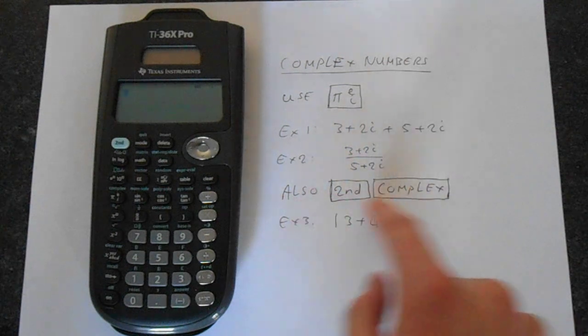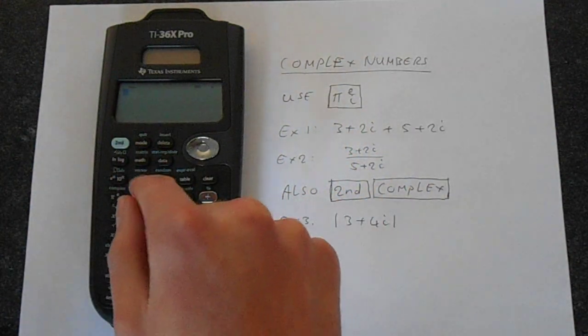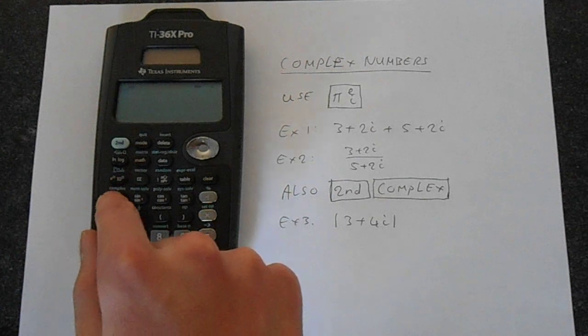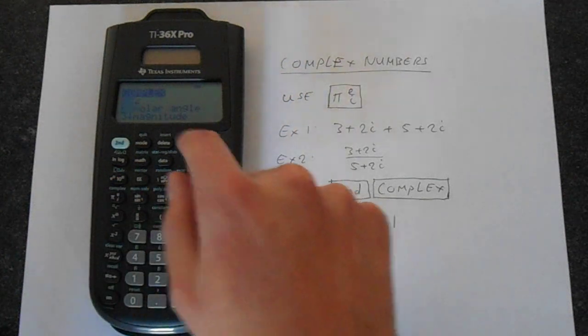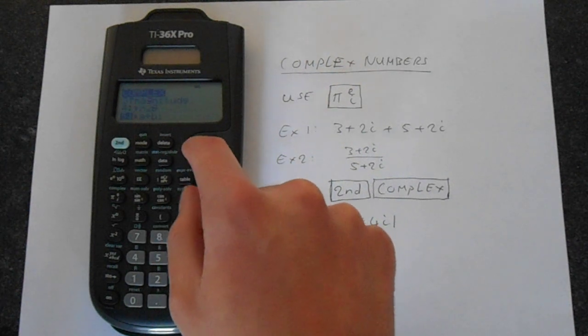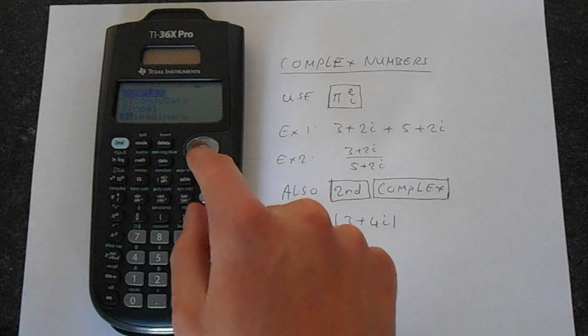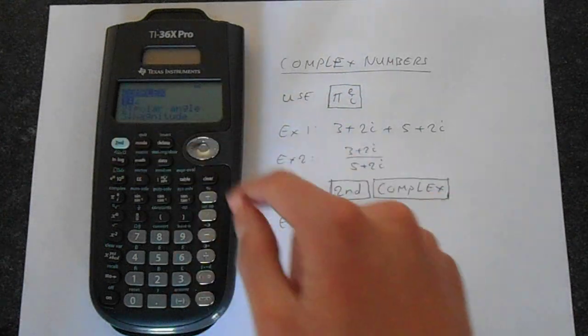We can also do various other things. So if we go second function and then we go to complex, which is on the same button but with second function, we've got angles, polar angle, magnitude, we've got polar form, conjugate, the real part, the imaginary part. So you can do various things.